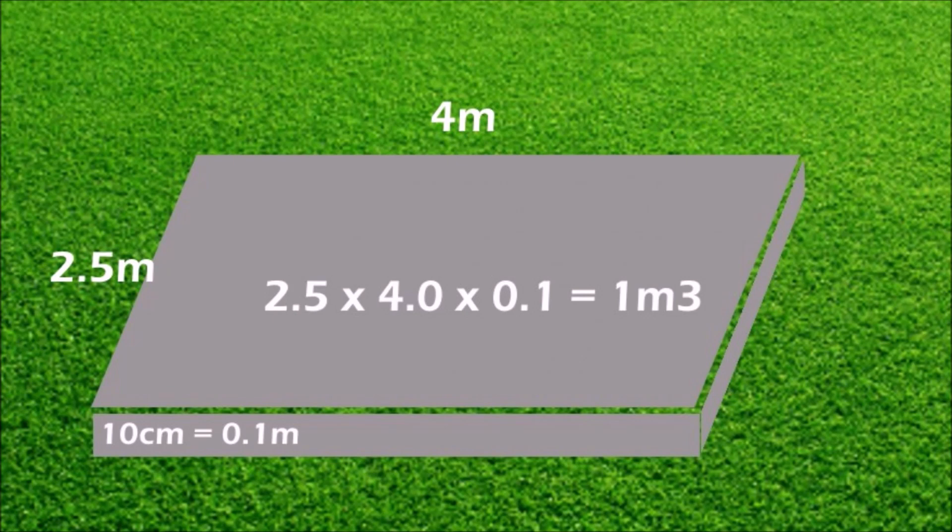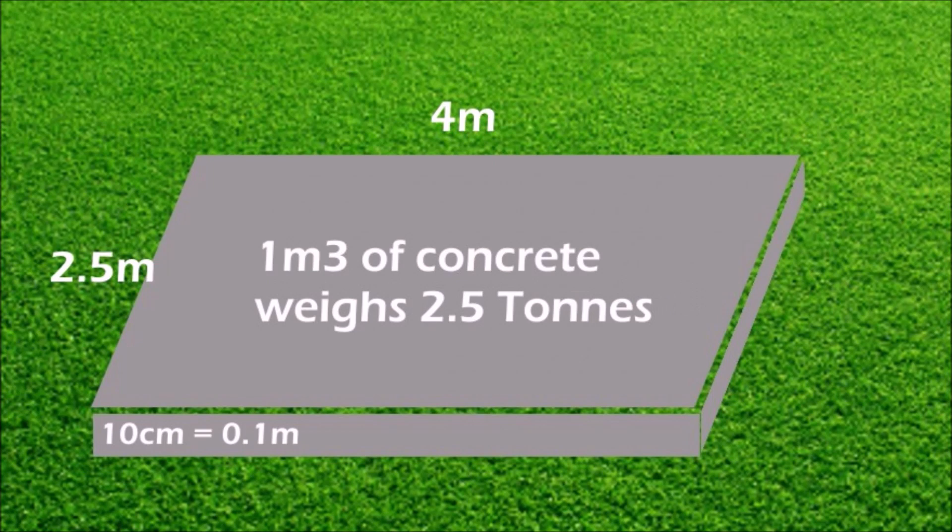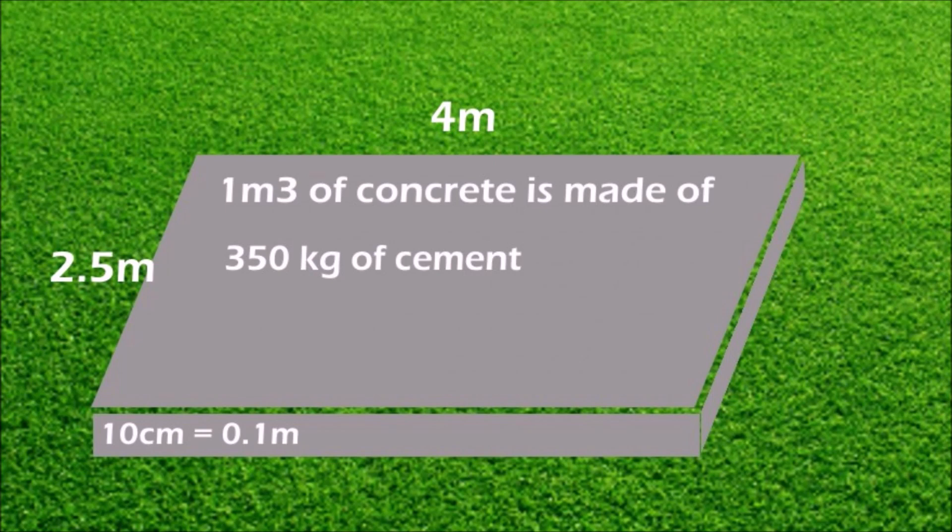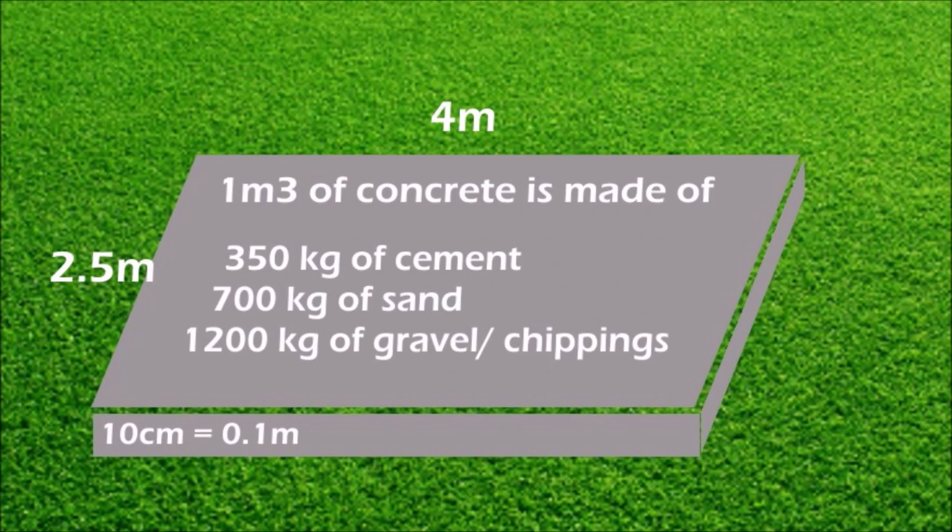You might wonder how much one cubic meter of concrete weighs. If you want to bring all this stuff into your garden, I've got bad news for you. One cubic meter of concrete weighs two and a half tons. If you intend to mix it in a concrete mixer: 350 kilos of cement, 700 kilos of sand, 1200 kilos of gravel, and 150 liters of water.